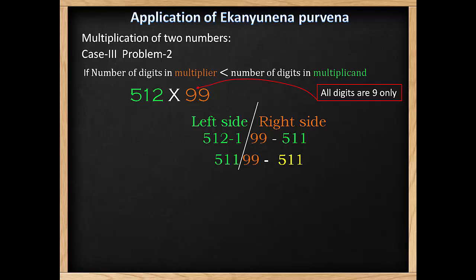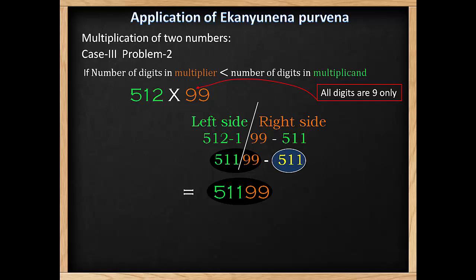In this special case, we will carry out some technique. We can combine the numbers like this — you can see 51199 is inside the black circle. Now subtract the yellow 511 from this number directly.